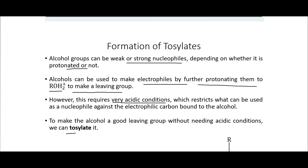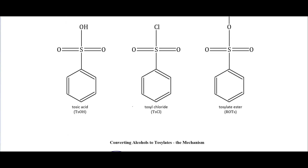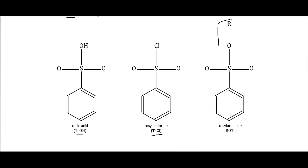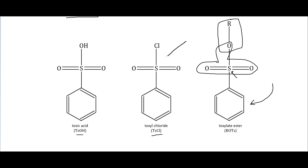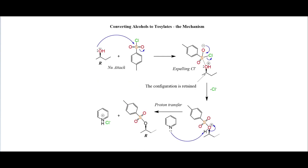To make the alcohol a good leaving group without needing those acidic conditions, we can tosylate it. We use tosic acid or tosyl chloride, and we bring in our alcohol to form a tosylate ester. When we tosylate something, we are placing a large group containing a sulfate group onto the alcohol, turning it into a good leaving group because there is a lot of resonance stabilization available.